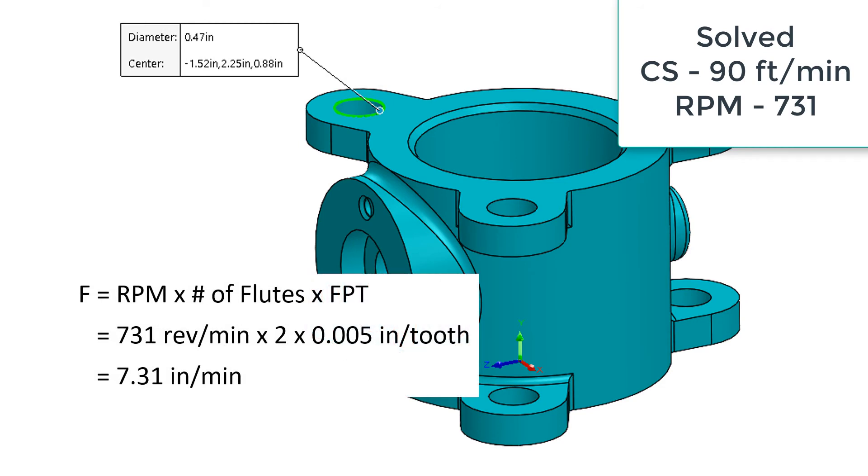To calculate the feed rate I need to multiply the RPM times the number of flutes times the feed per tooth. So 731 times a two flute drill times a feed per tooth of five thou per rev gives me a feed rate of 7.31 inches per minute.